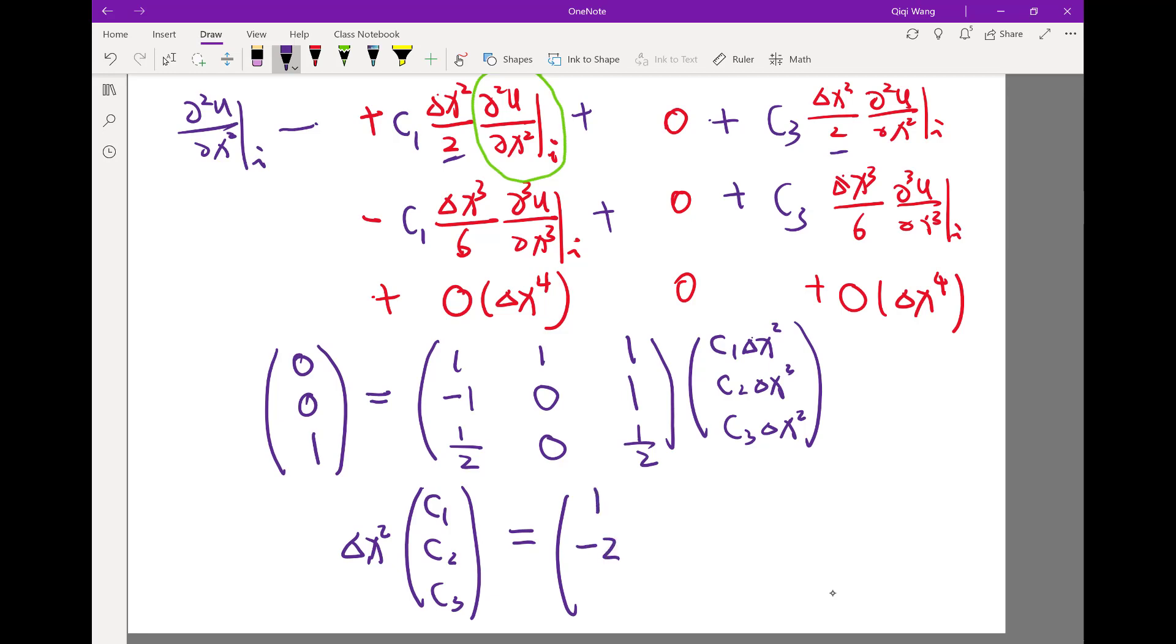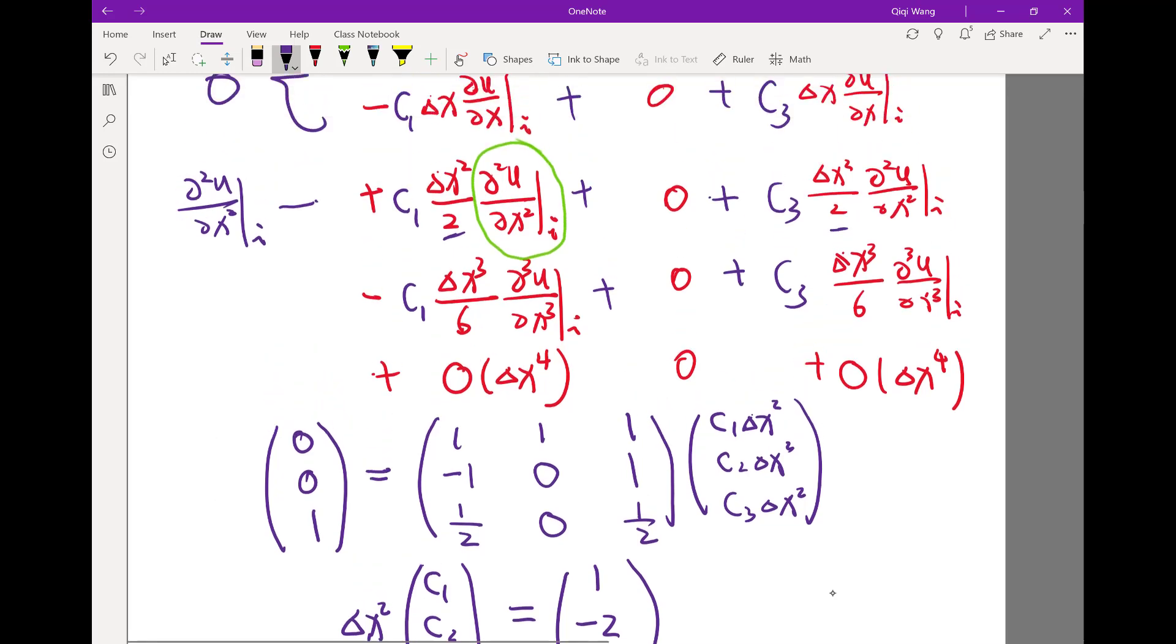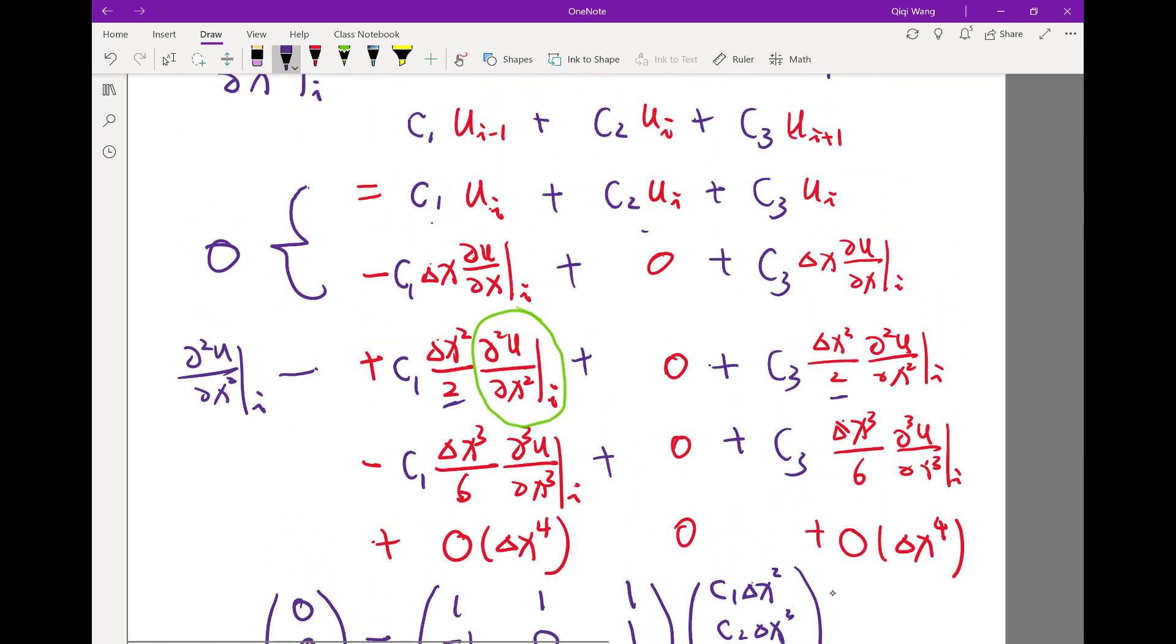Student question: I'm wondering how you pulled out the delta x square from the first two rows? I actually didn't. I just, because I know the first two rows are supposed to be zero, it doesn't matter if I multiply them by delta x or delta x square.